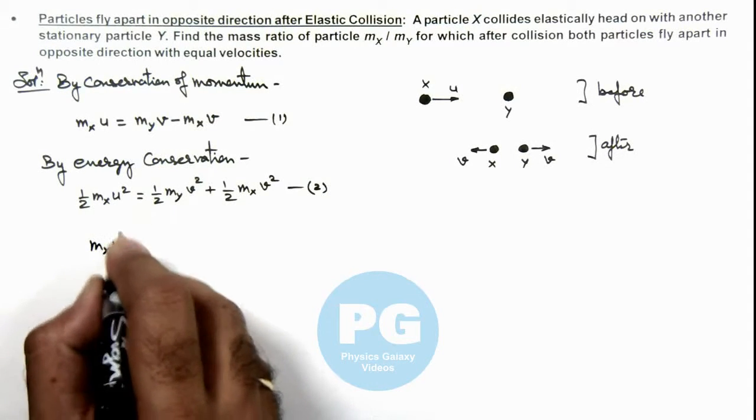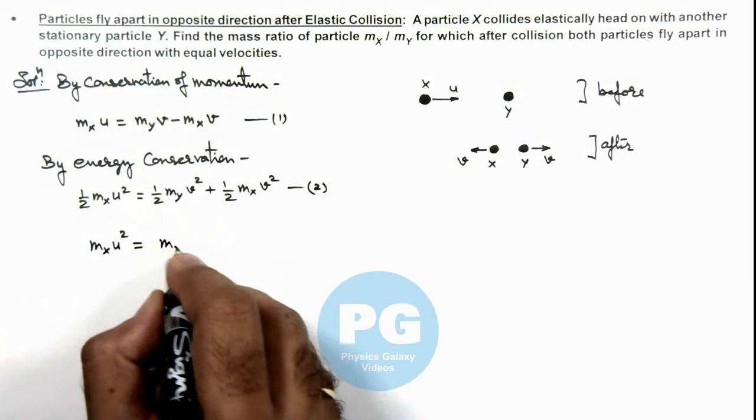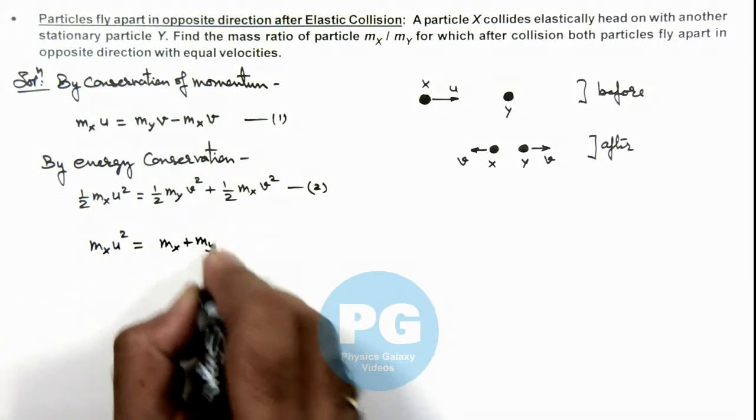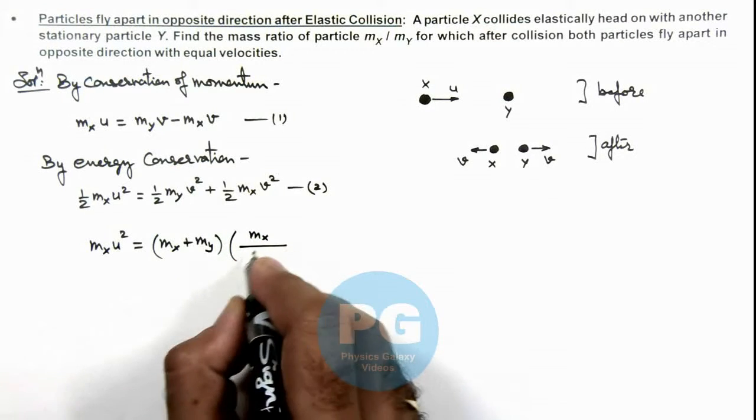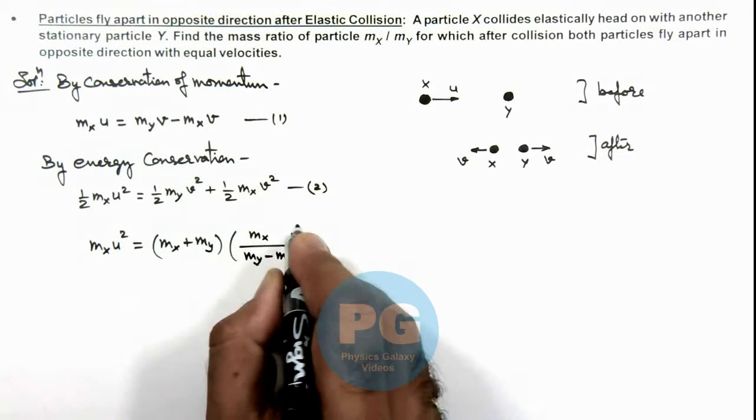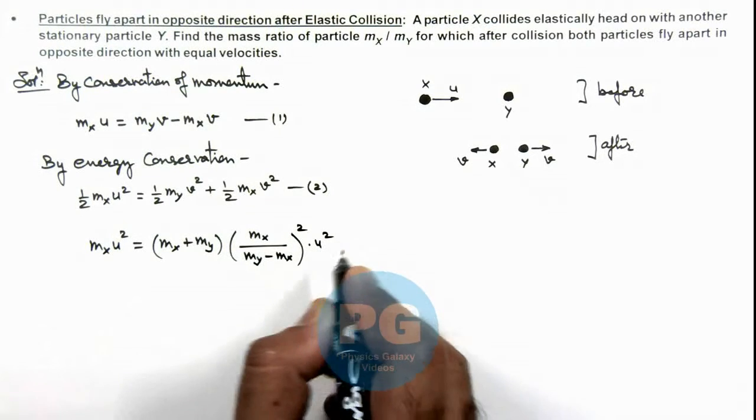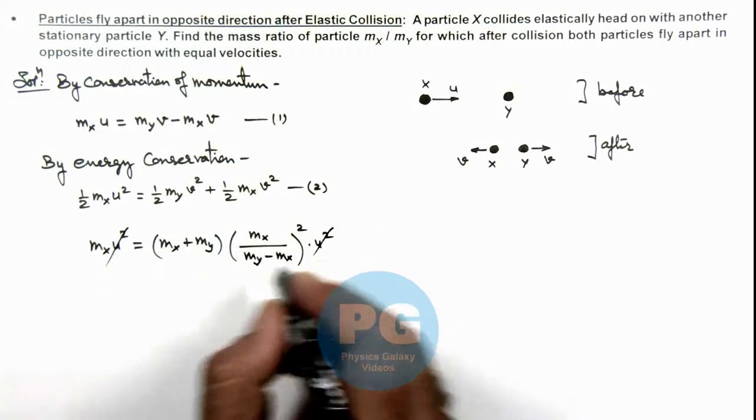So this is mx u square is equal to this will be mx plus my multiplied by mx over my minus mx whole square multiplied by u square. Here u square also gets cancelled out.